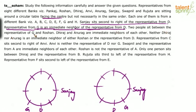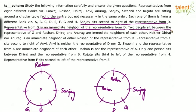Two people sit between the representative of G and Roshan. In Case 1, checking both directions from G, Roshan's position is determined. In Case 2, G can have two sub-possibilities for Roshan. We go forward without duplicating further to see what constraints follow.